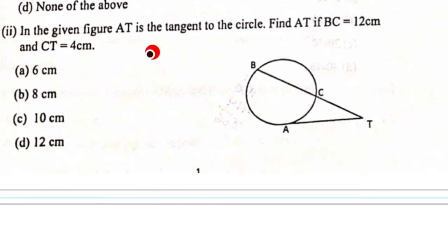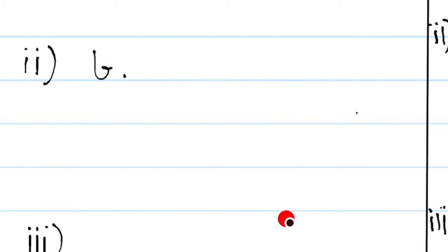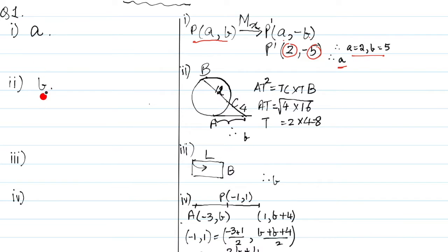Second question: In the given figure, AT is the tangent to the circle. Find AT if BC is 12 and CT is 4. CT is 4 and CB is 12. Tangent squared is equal to the product of the chords, so AT² = TC × TB = 4 × (12 + 4) = 4 × 16. AT = √64 = 8 centimeters. The option is B. This working is there for you to check back if you have made any error.